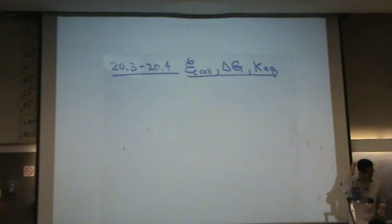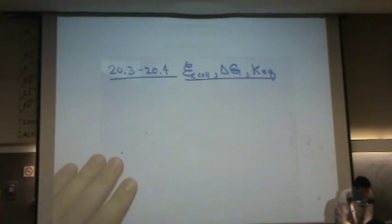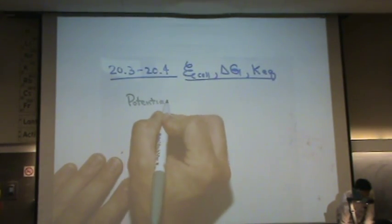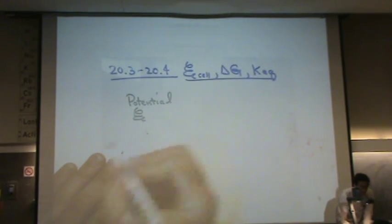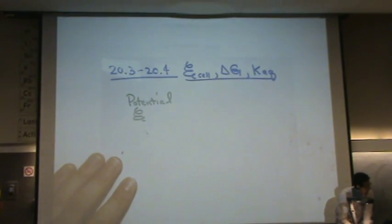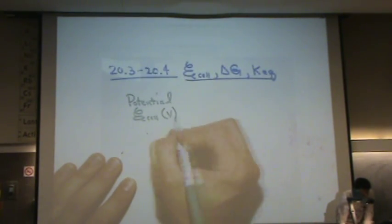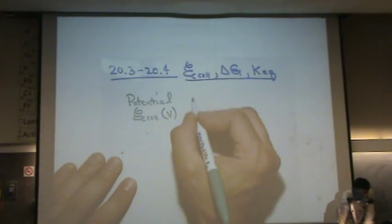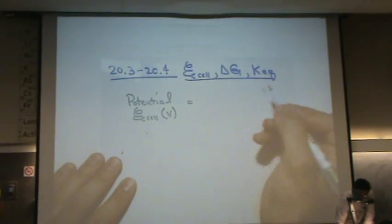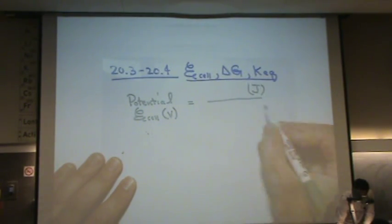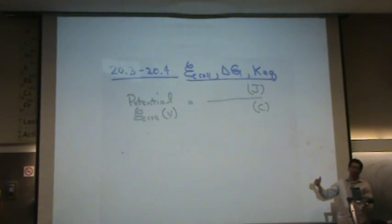So what turns out is that, let's write the potential. Let's say we have a potential that's like an E cell or something like that — that's in units of voltage. That is equal to joules per coulomb, or an energy per charge unit.